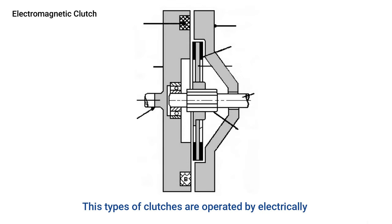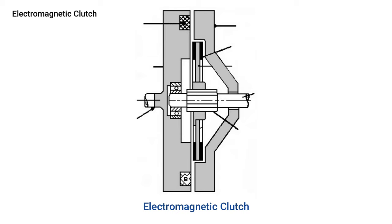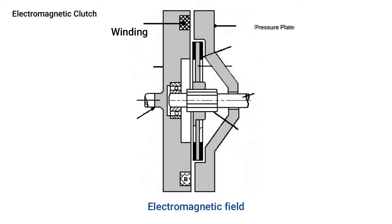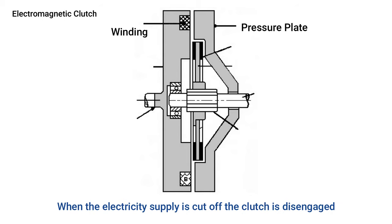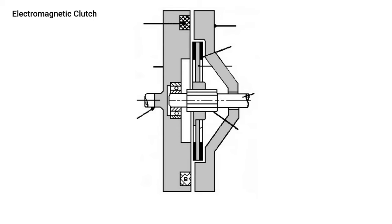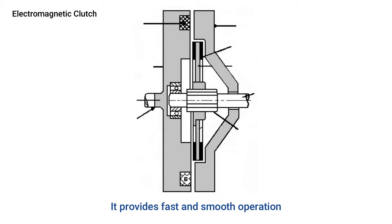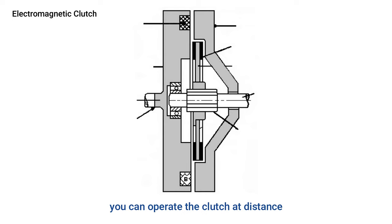The electromagnetic clutch is operated electrically, but torque is transmitted mechanically. The flywheel consists of a winding; when electricity supplied by the battery passes through the winding, it produces an electromagnetic field that attracts the pressure plate, engaging the clutch. When the electricity supply is cut off, the clutch is disengaged. These clutches have no mechanical linkage to control engagement, providing fast and smooth operation. Electromagnetic clutches are most suitable for remote operation, allowing the clutch to be operated from a long distance.